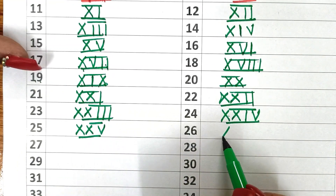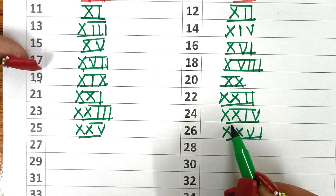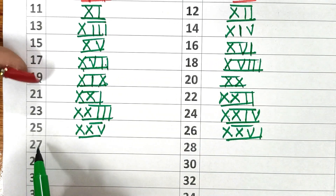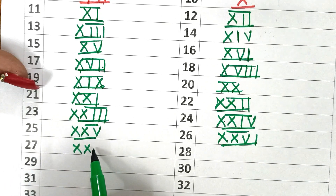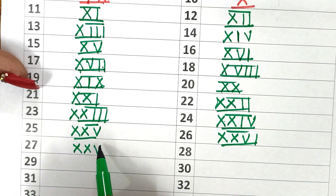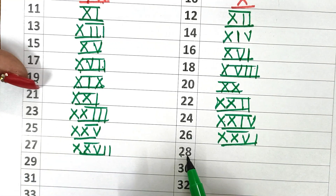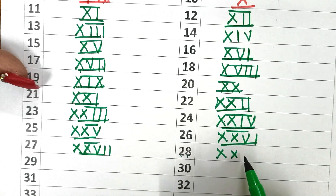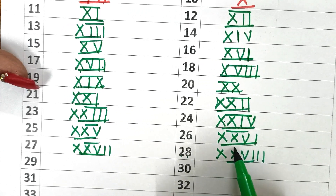26: first we write 20 then 6, and 6 is 5 plus 1 — XXVI. Now 27: first write 20 and then write 7 — how do you write 7? First write 5 and then add 2 — XXVII. Now 28: 20 and then 8, which is 5, 6, 7, 8 — XXVIII.